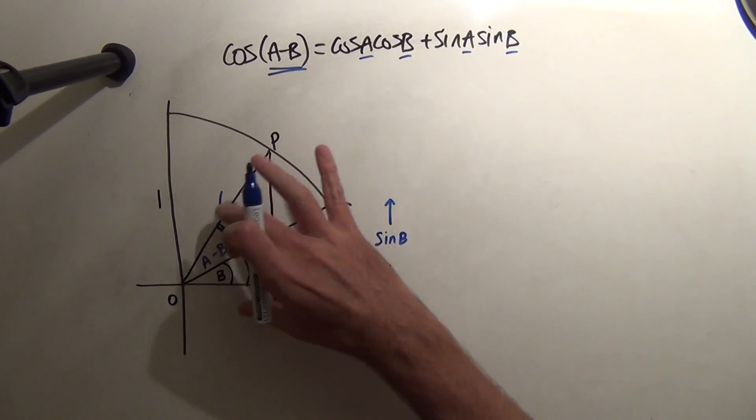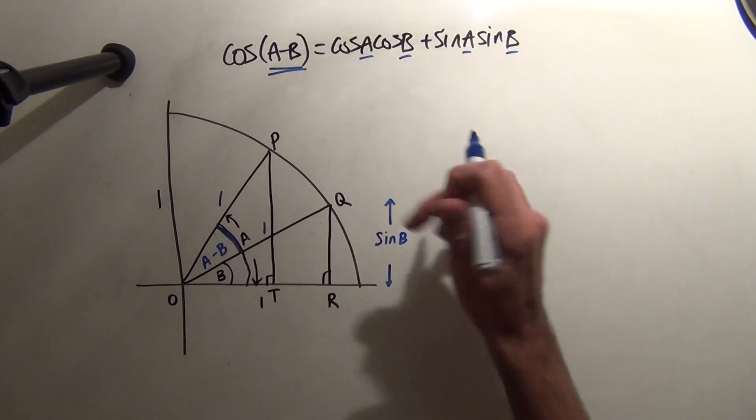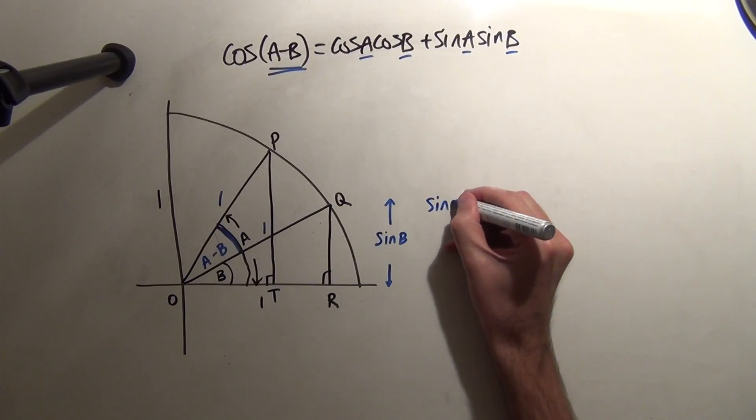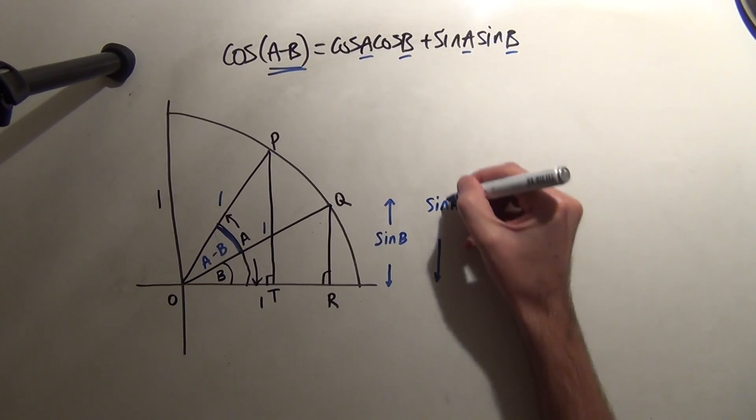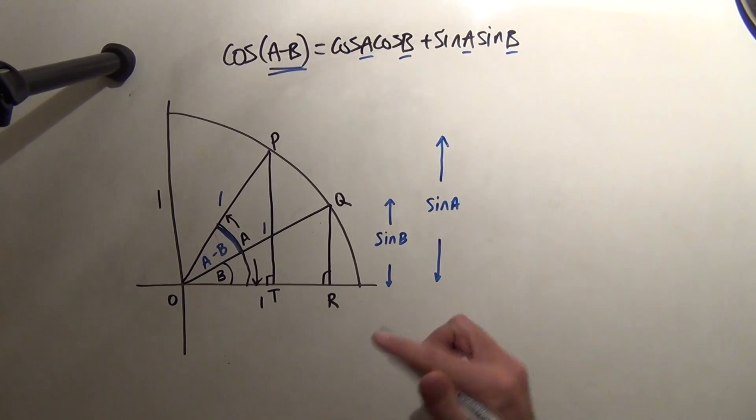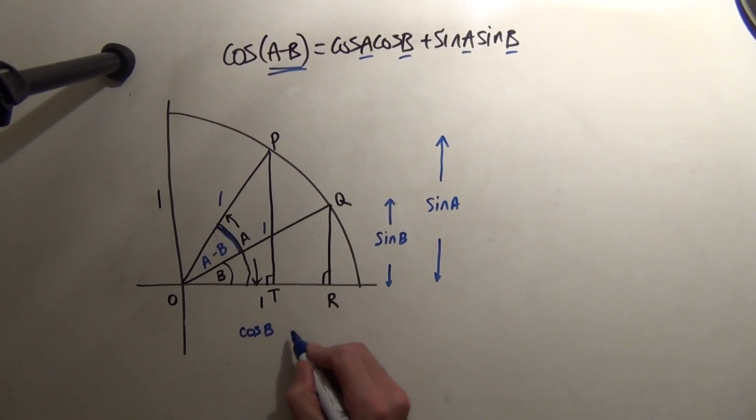And this distance here should be the sine of A. OR should therefore be the cosine of B. And OT will be the cosine of A. This is all from first principles.